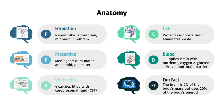CSF helps protect and support the brain and eliminate waste, and the blood supplies it with nutrients, oxygen, and glucose. There's also a blood-brain barrier surrounding the brain, which allows for selective access of molecules to reach the brain. Fun fact: the brain is only 2% of the body's weight but uses 20% of the body's energy.